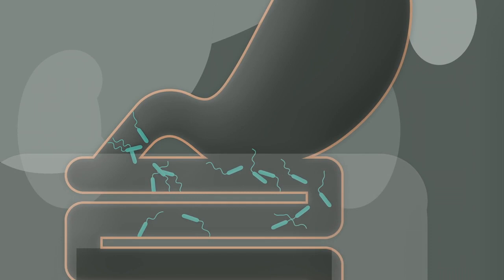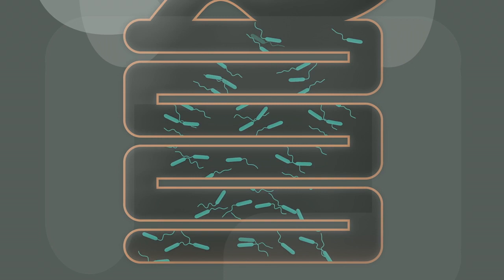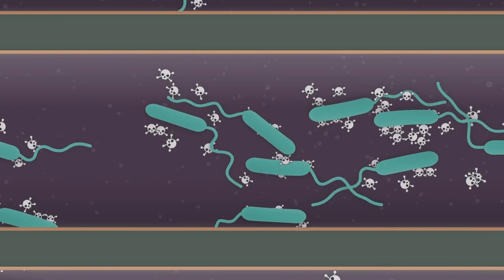After passing through the stomach, the Vibrio multiply in the small intestine and secrete a toxin, which provokes a series of biochemical reactions.